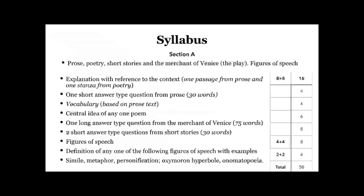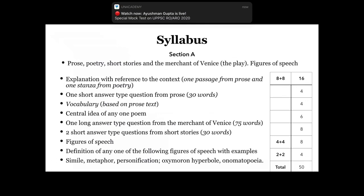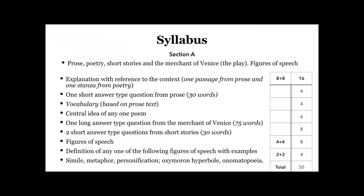First of all, the first section will be explanation with reference to the context, one passage from prose and one stanza from poetry. Each will be of 8 marks. Second, one short answer type question from prose, approximately of 30 words with 4 marks.